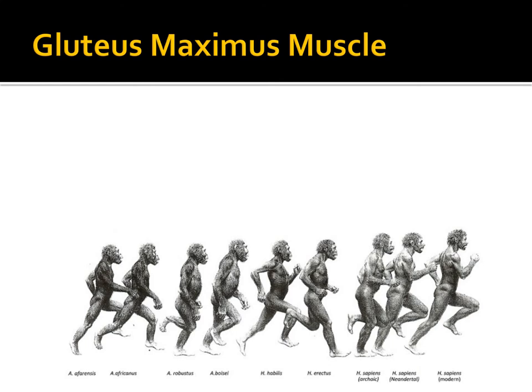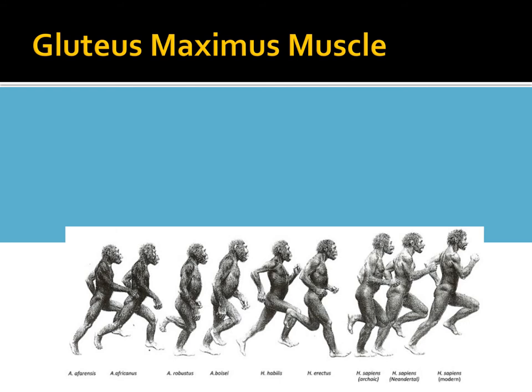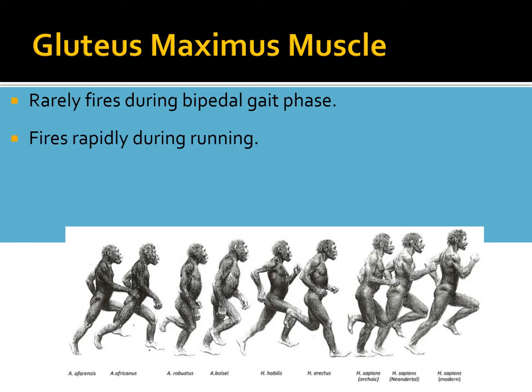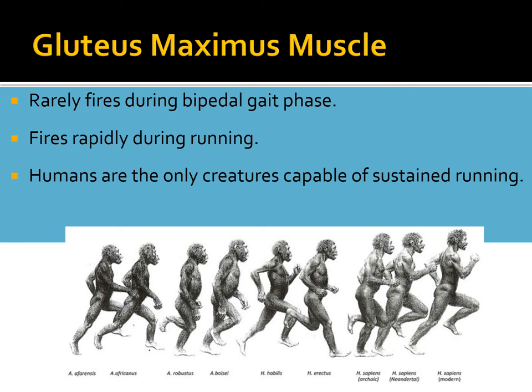What evidence do we have of this major physiological adaptation? Just look at your gluteus maximus muscle — one of the largest muscles in your body. It rarely fires during your regular walking, what we call your bipedal gait phase. But it fires rapidly during running. Humans are the only creatures capable of sustained running, and we have the physiological adaptations to show it.